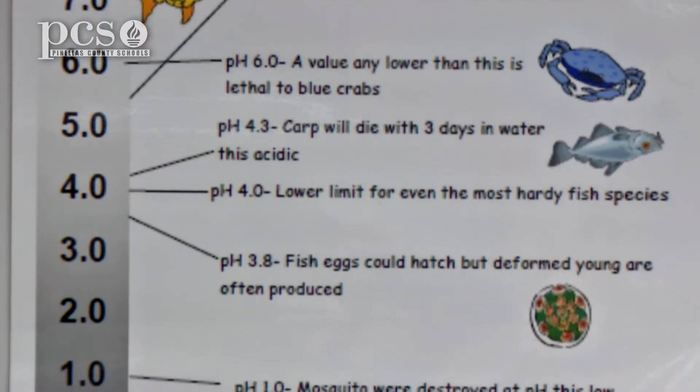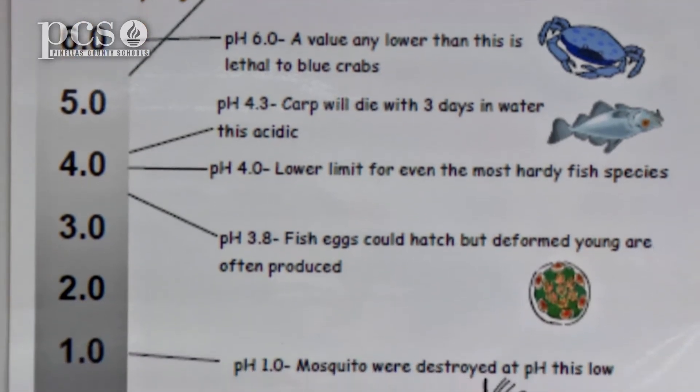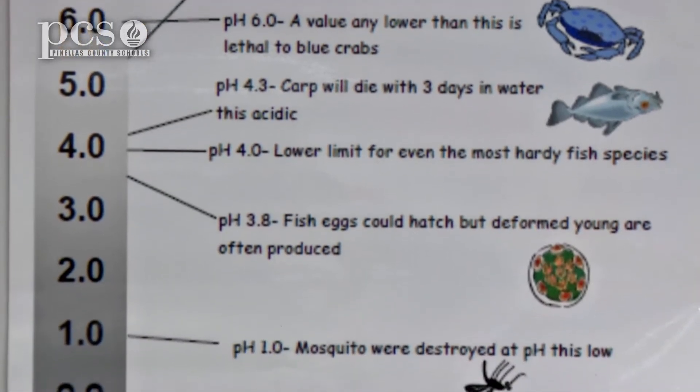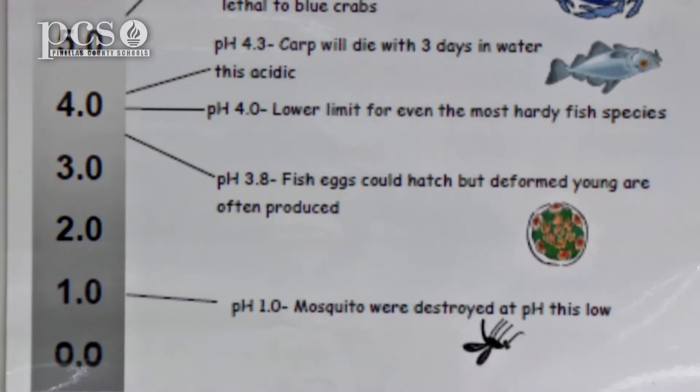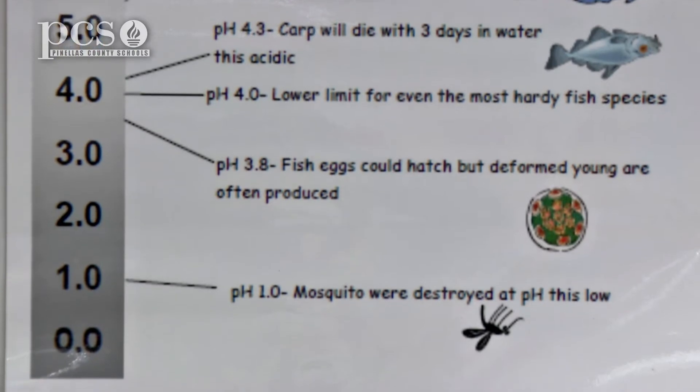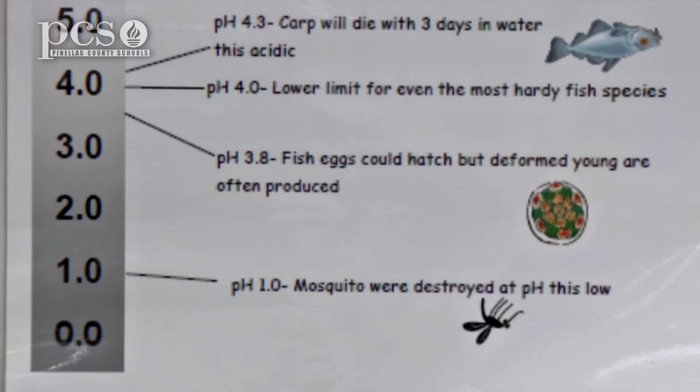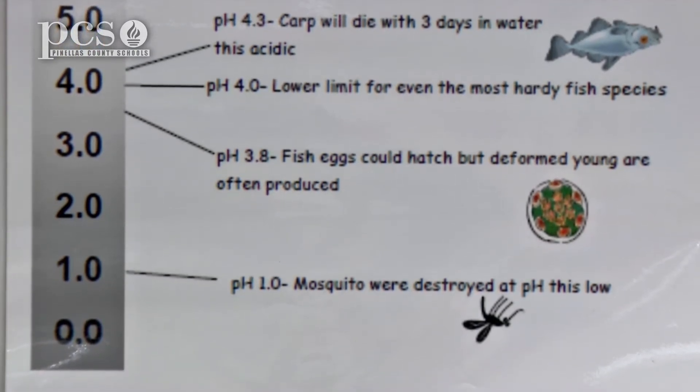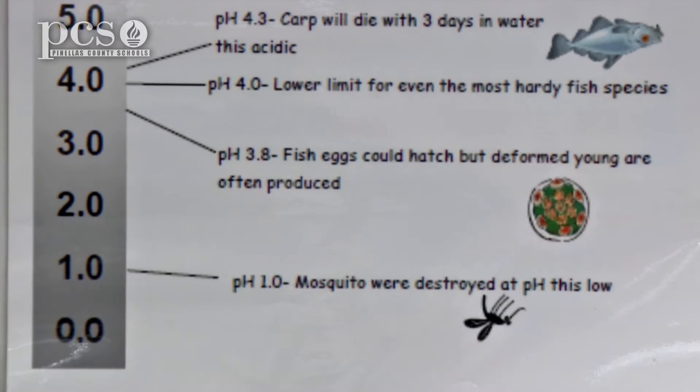Some of the things that happen are that it could remove the protective slime coating off fish and animals. It may make food unavailable for them to eat, and it can even affect mosquitoes. So we like to keep that water at a healthy 7 — that nice, even level — which is called neutral.